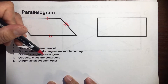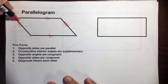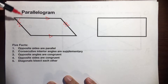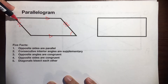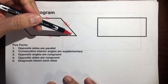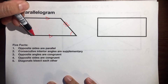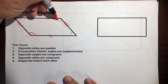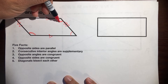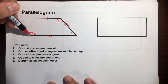Opposite angles are congruent. We can put one arc here, and its opposite angle would also have one arc. So if this angle was 50 degrees, then this angle would have to be 50 degrees. And this angle with two arcs will be congruent to its opposite angle with two arcs — so if this angle was 130 degrees, then this angle would also be 130 degrees.